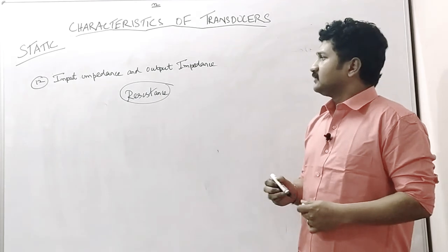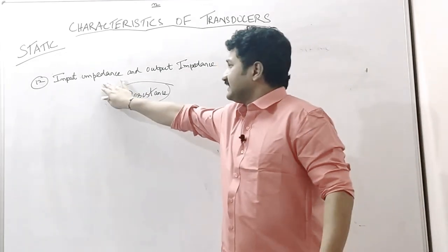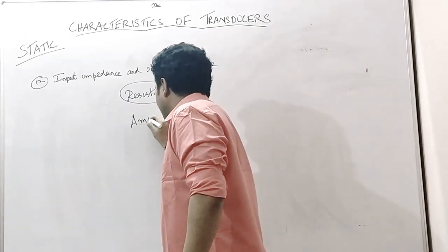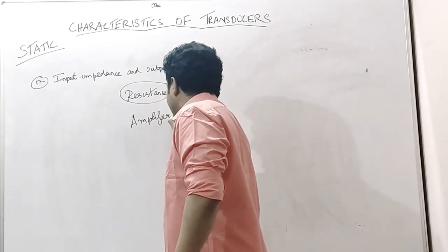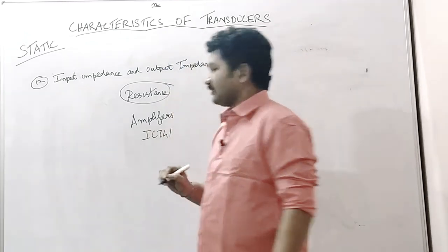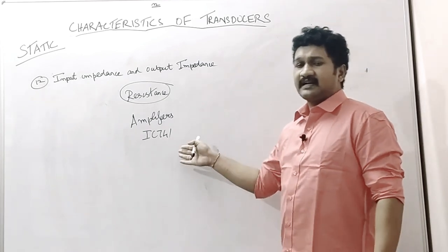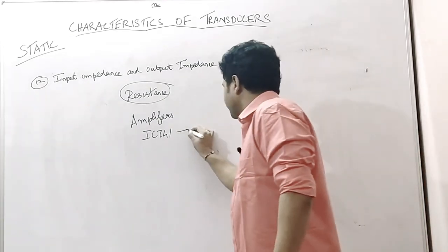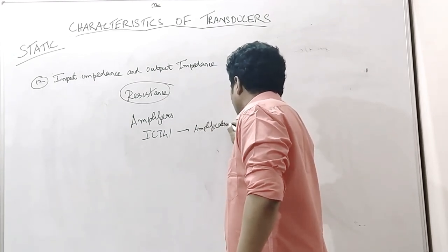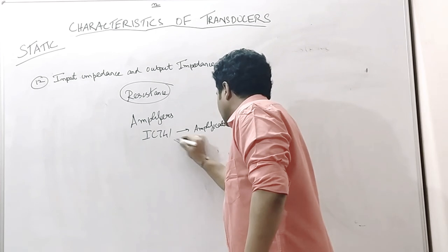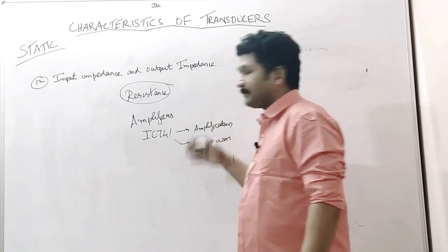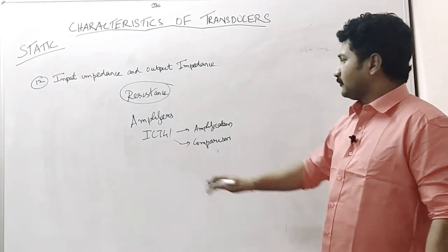What is called as input impedance? These input impedance and output impedance are the terms used in amplifiers. For example, there is an IC called as amplifier, called as IC741. This can be used for many purposes: for amplification of voltages, comparison of voltage, and several applications like this.